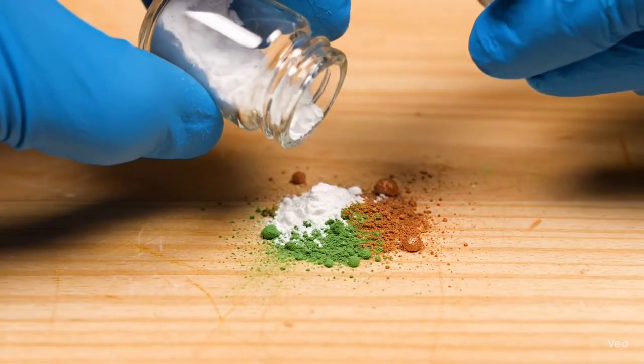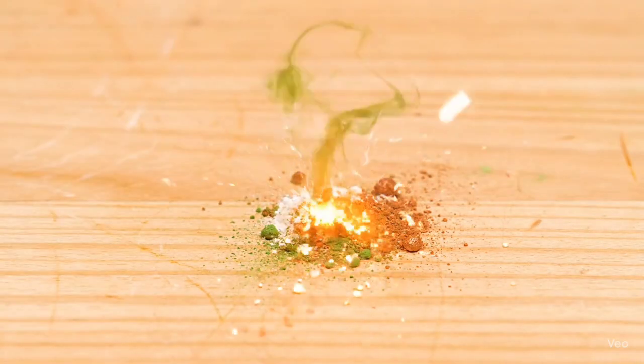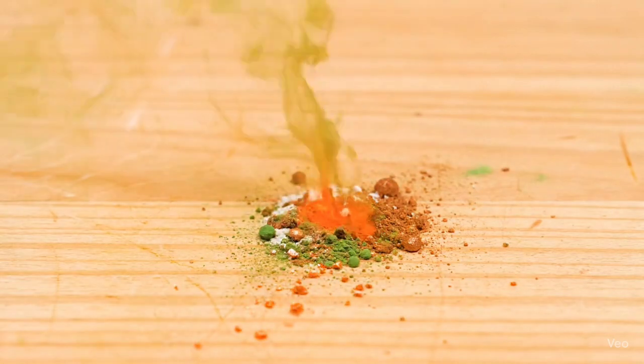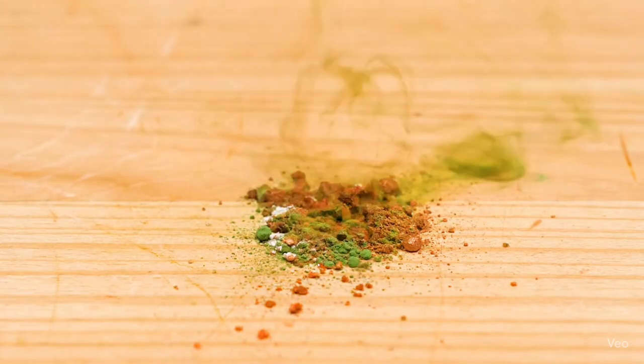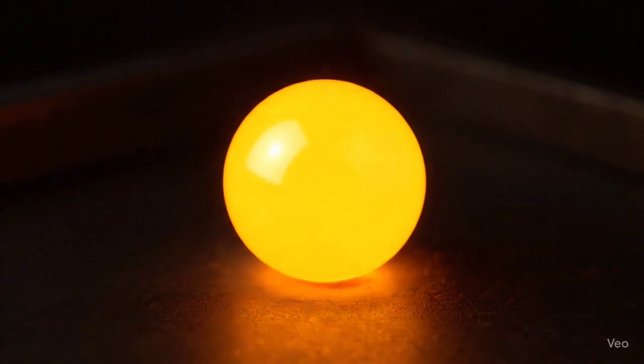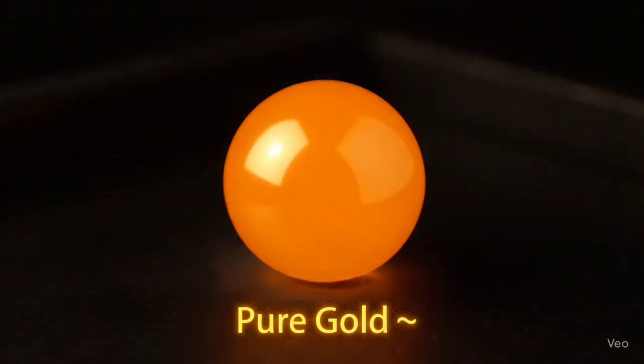Add borax and potassium nitrate. The nitrate oxidizes copper into copper oxide, while borax absorbs it. What's left is pure, bright gold, free from copper.